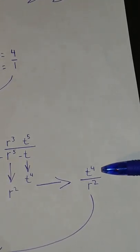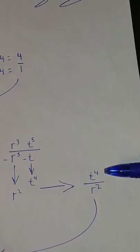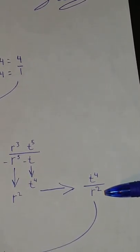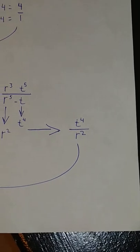In the end, it will all equal t4 in the numerator and r2 in the denominator.